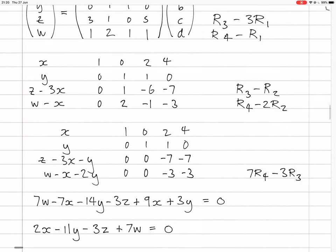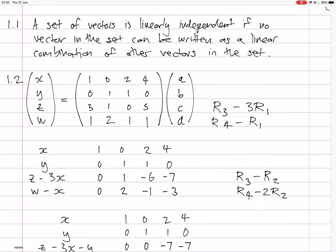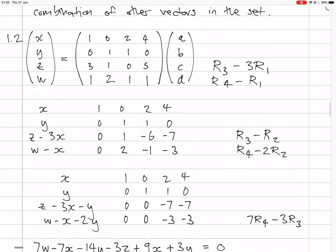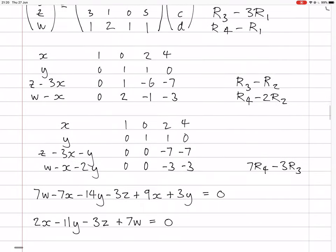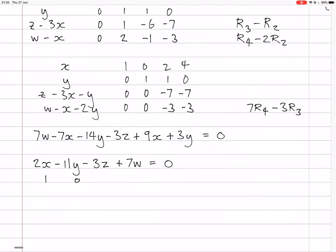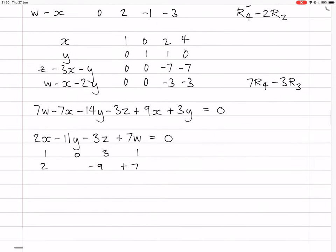Okay, so supposedly this should be the Cartesian equation, we can check it though, because we can check to see that all the vectors, the four vectors, they all do lie in it. So the first vector is 1, 0, 3, 1, so x is 1, y is 0, z is 3, w is 1. So that would give you 2 minus 9 plus 7, which is 0, yes. Then the next vector was 0, 1, 1, 2, so x is 0, y is 1, z is 1, w is 2. So that would give you minus 11 minus 3 plus 14, which is 0, cool.